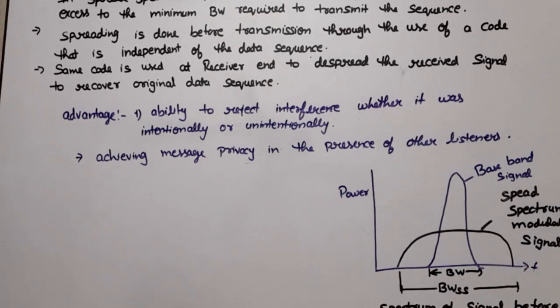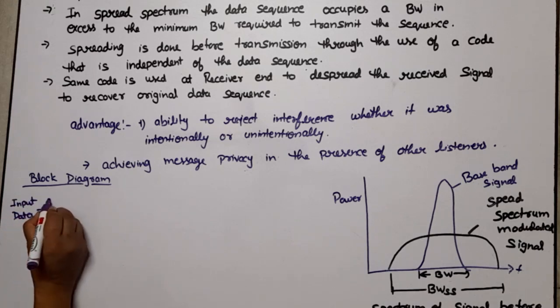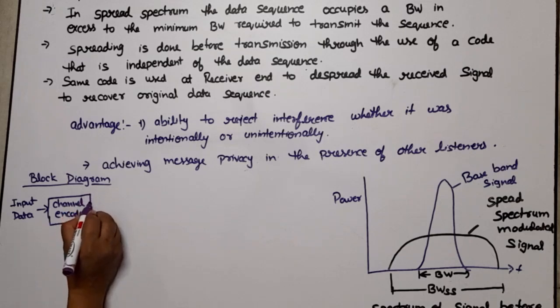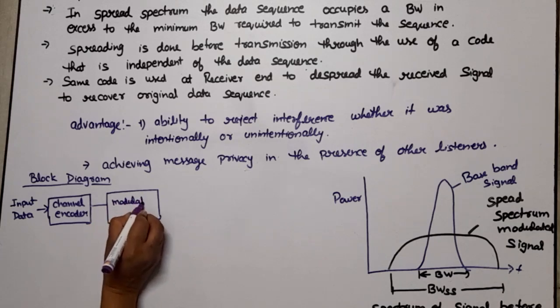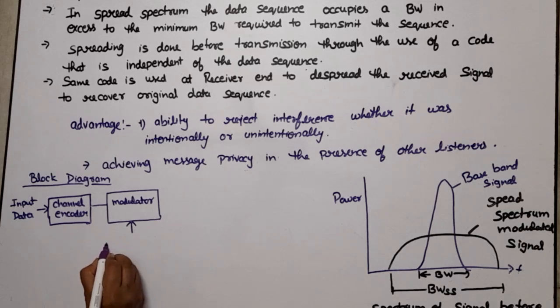First let's see the block diagram. We have input data. Input data will be passed to channel encoder. Channel encoder will encode the input data. After that this is passed to a modulator.